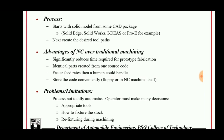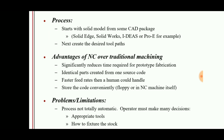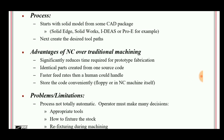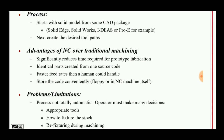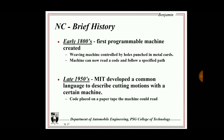Advantages of NC over traditional machining include reduced time, the ability to create identical parts from one source code — which can be modified to produce similar parts — and faster feed rates. Codes can be stored on a floppy disk to save time. The main problems are tools, fixtures, and re-fixturing.